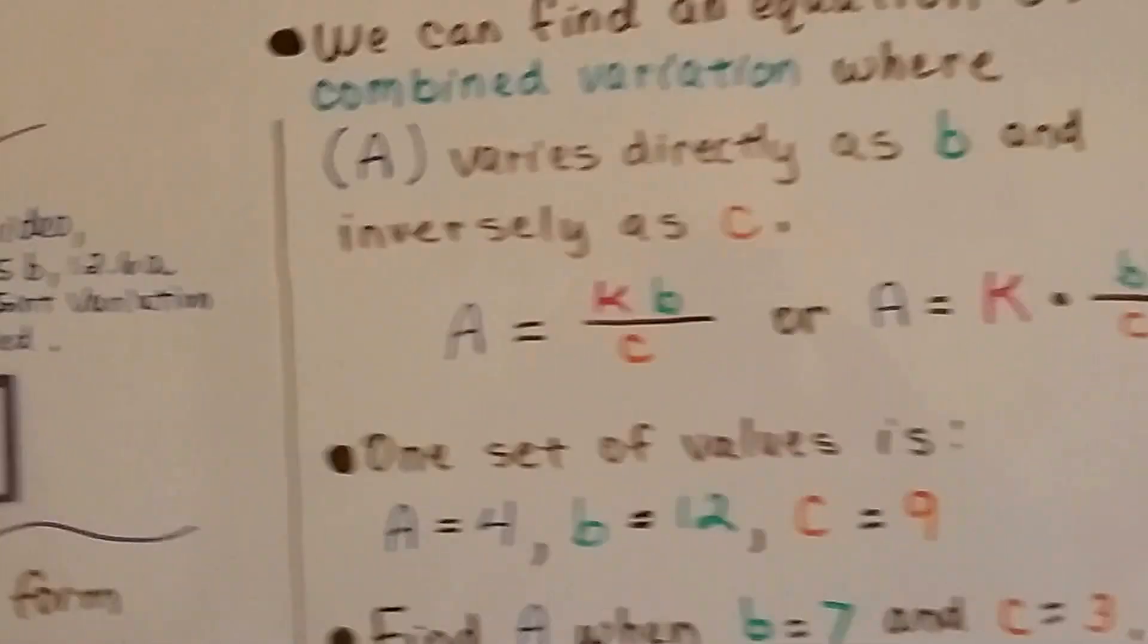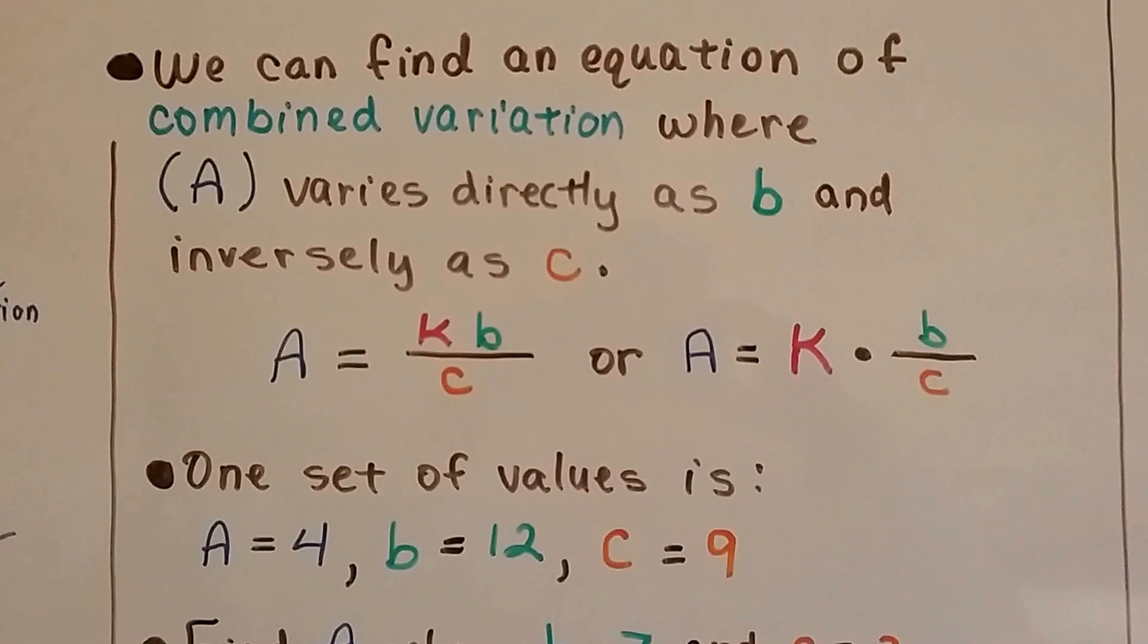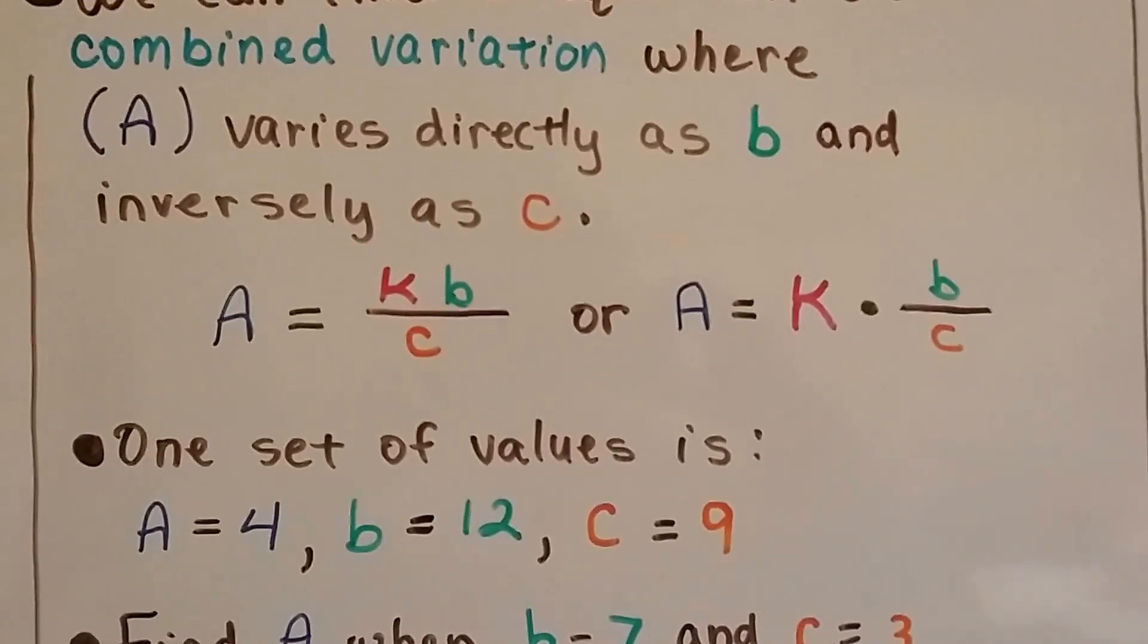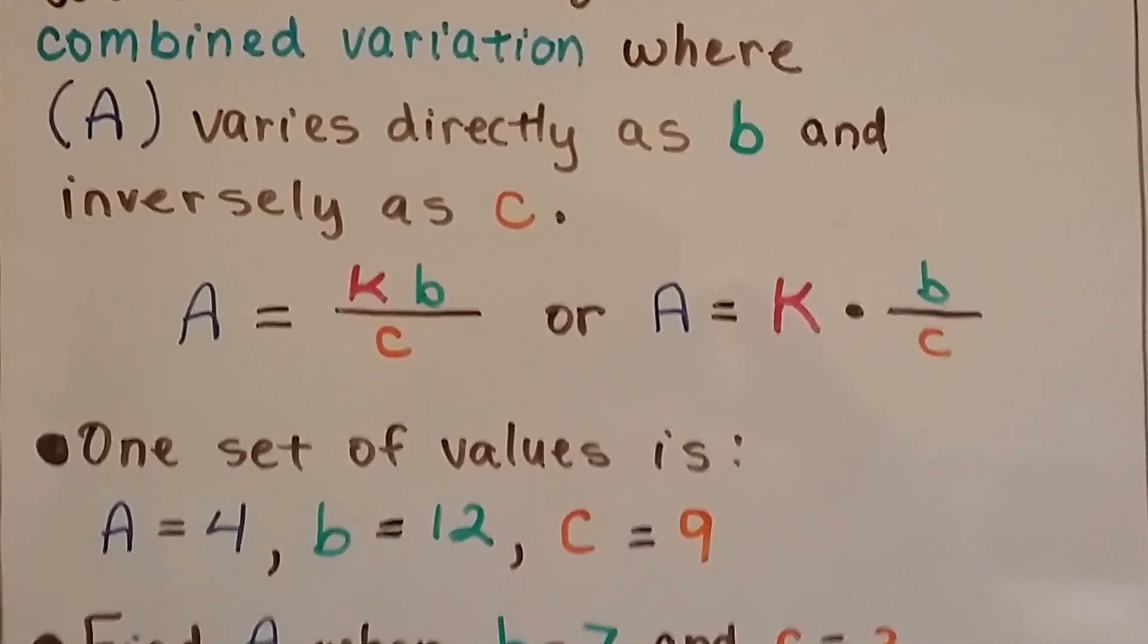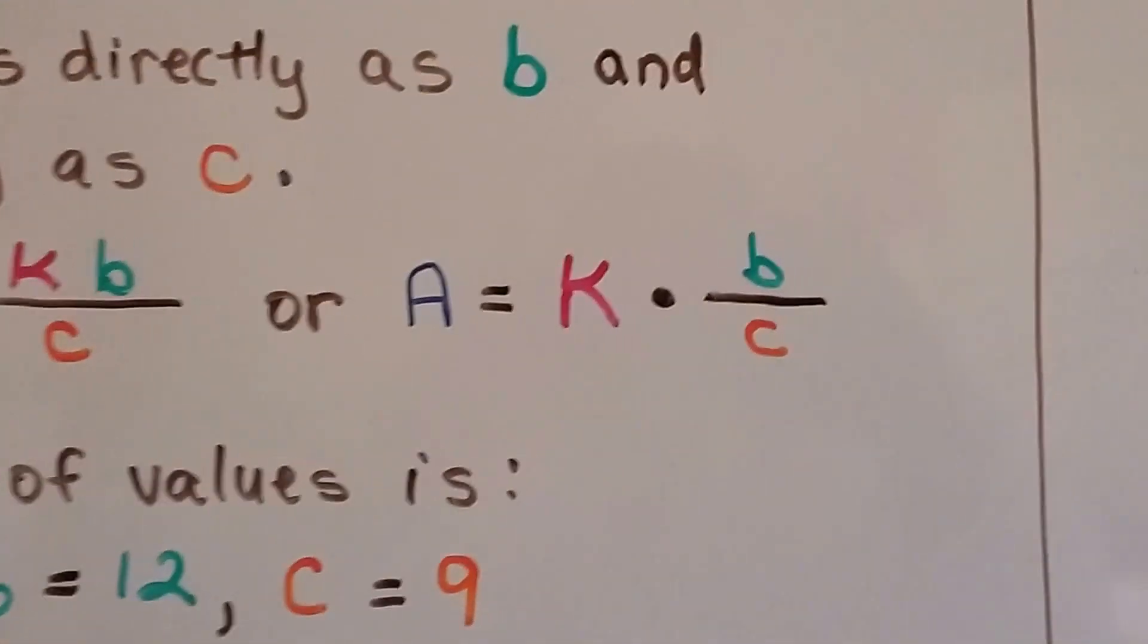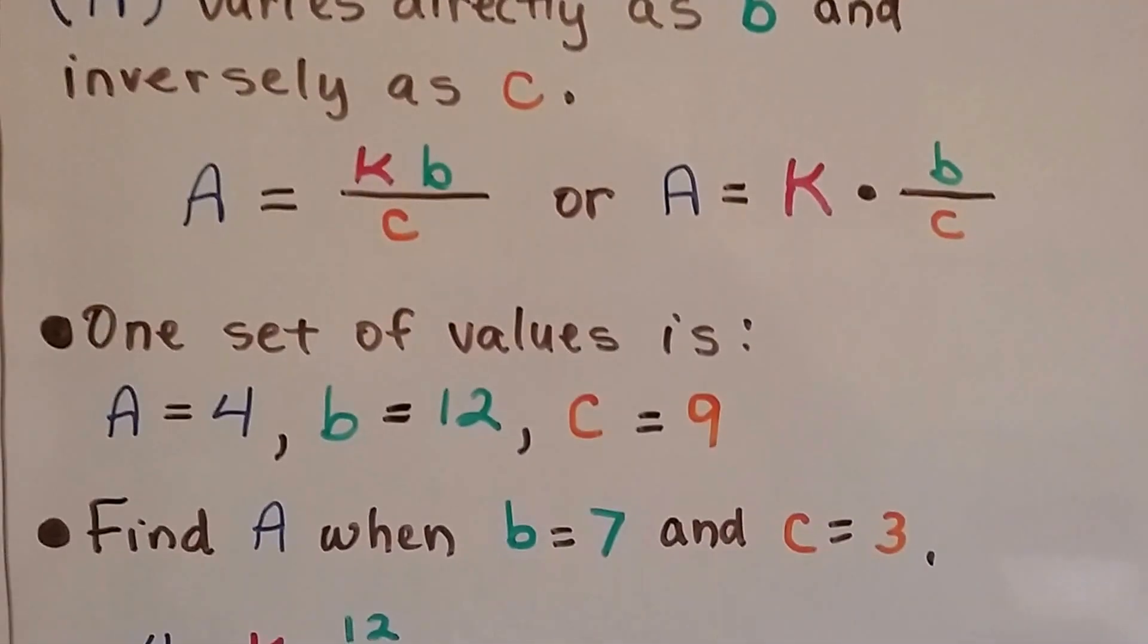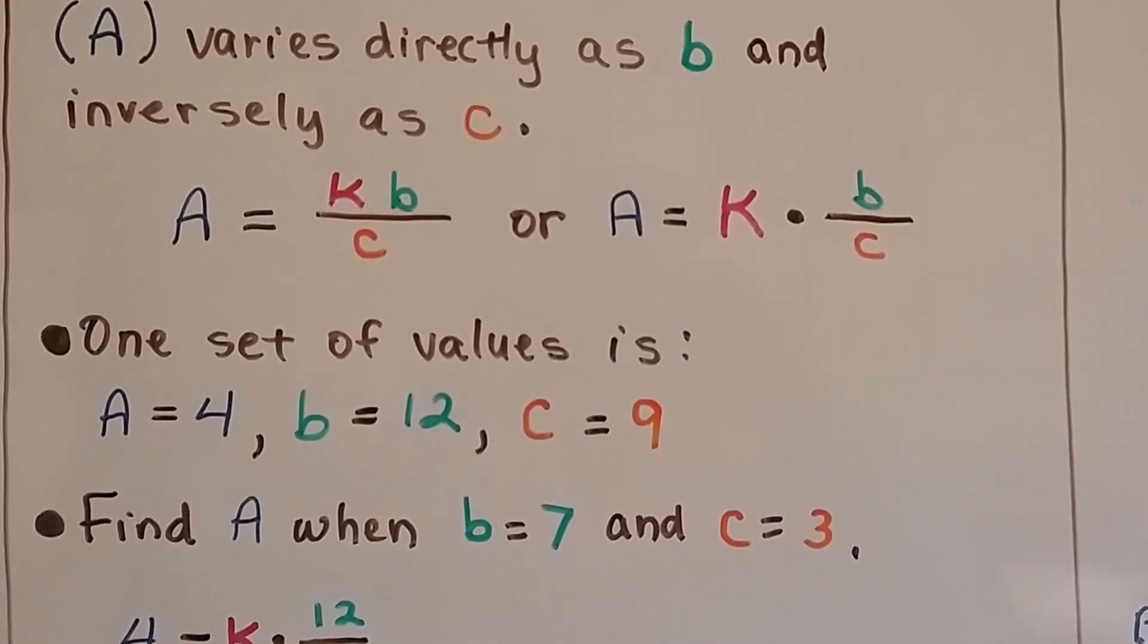We can find an equation of combined variation where a varies directly as b and inversely as c. So a equals k times b divided by c, or we can say it as a equals k times b over c. Either way is all right. One set of values is going to be a equals 4, b equals 12, and c equals 9.